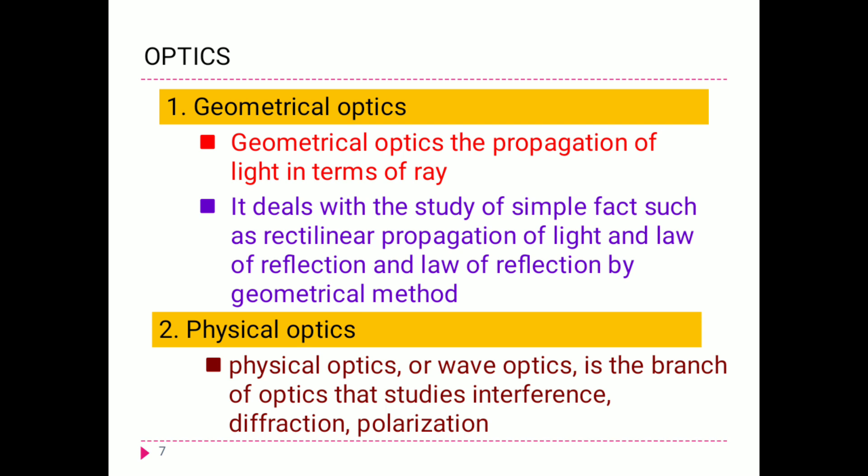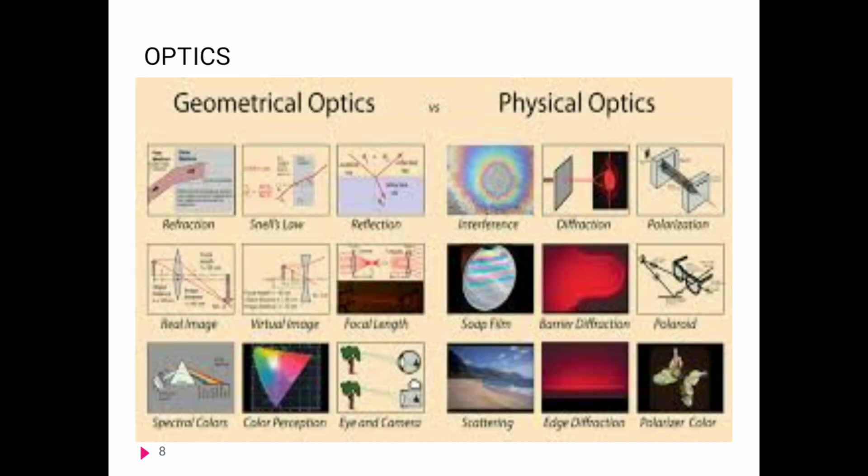They were also aware of refraction of light as it passes from one transparent medium to another. Geometrical optics deals with both reflection and refraction. John Kepler discovered the phenomenon of total internal reflection. Later, Fermat discovered the principle of least time, which states that light always follows the path which takes the shortest time to reach the destination from one point to another.